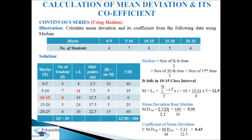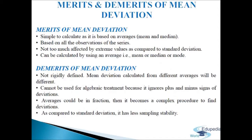Coefficient of mean deviation C·MD(m) = MD(m) / M = 5.33 / 12.5 = 0.43. This is how we calculate mean deviation and its coefficient in continuous series using median.